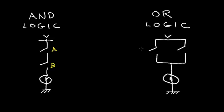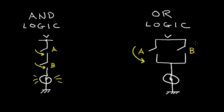Over on the right side, I have an OR structure. Let's call this switch A and switch B. AND logic means that I have to close this switch AND this switch for the bulb to light up. OR logic means that I can close this switch OR this switch and have the bulb light up. The AND required both switches to be closed for the event to happen. In the OR logic, it only required one switch to be closed for the event to happen.